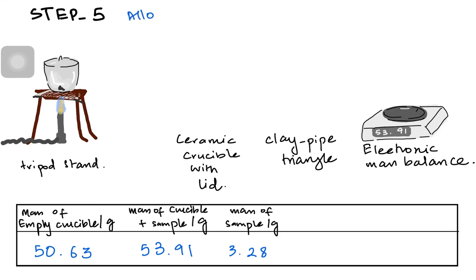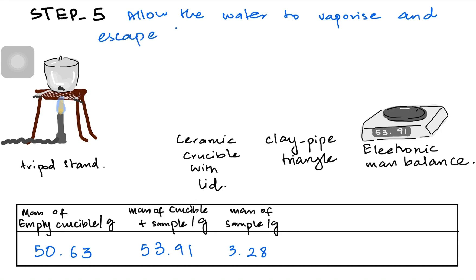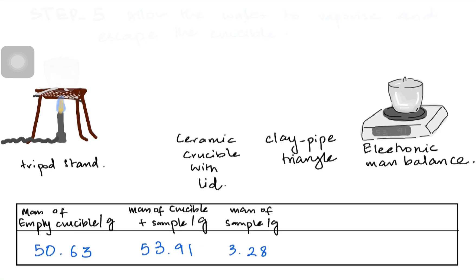In step 5, we allow the water of crystallization to vaporize and escape from the crucible. You should be aware that the solid might also decompose during this process, but we'll talk about that separately.